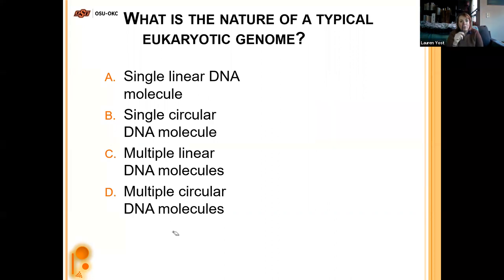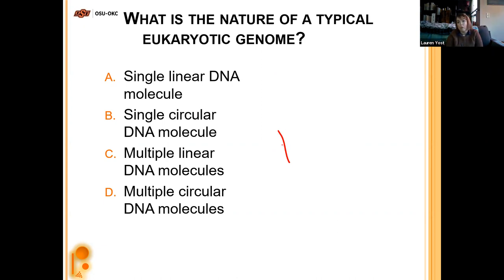A typical eukaryotic genome is linear — that's why chromosomes look like X's. Humans have 23 pairs for 46 total chromosomes; the last two are the sex chromosomes. Eukaryotes have multiple linear DNA molecules.